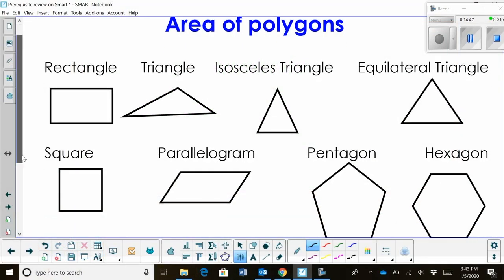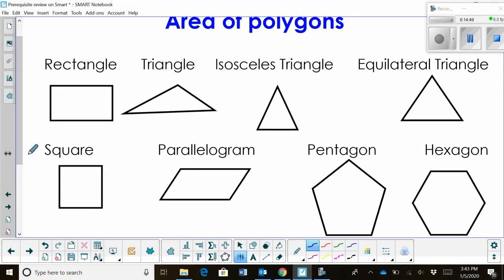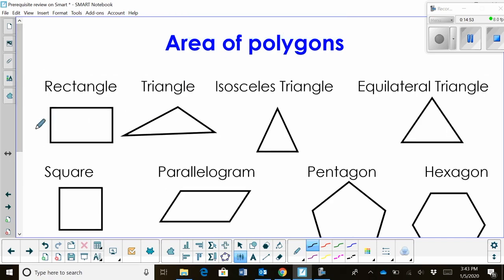Now let's talk about areas of polygons. Most of these are pretty easy, so we can just review them. The area of a rectangle: you just need to know your length and width, then multiply length times width.